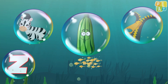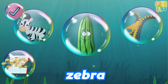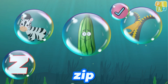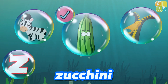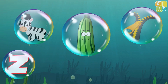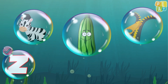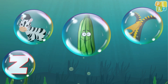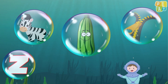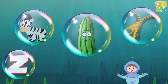Today we found a zebra, a zip, and a zucchini — and they all start with the letter Z. See you next time under the sea at Play English School. Bye!